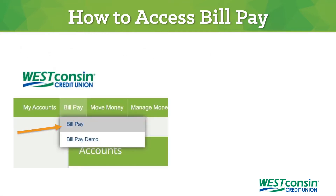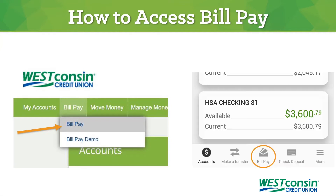If using WESTconsin Online, hover over BillPay in the green main menu bar and choose BillPay from the drop-down options. If you are using the mobile app, tap BillPay at the bottom of the screen.